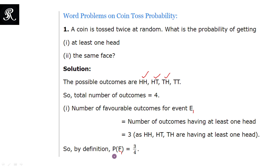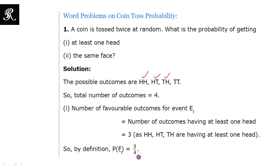The probability of event E1 would be equal to the number of favorable outcomes divided by the number of total outcomes. The favorable outcomes here are the first three, so that is 3, divided by the total number of outcomes in the experiment of tossing a coin twice, which is 4. So P(E1) = 3/4.